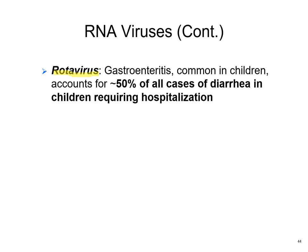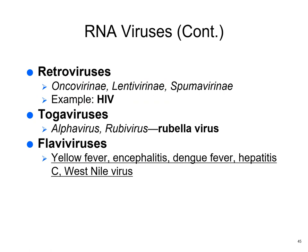Rotavirus causes gastroenteritis — 50% of all cases of diarrhea in children requiring hospitalization are from rotavirus. Retroviruses, like HIV, will be covered in more detail later. Togaviruses — rubella is an example. There is a vaccine so it's not very common now, but if a pregnant person gets rubella it causes damage to the fetus: brain damage, visual damage, possibly death or miscarriage.